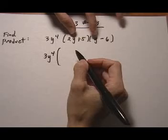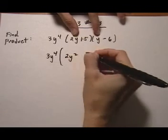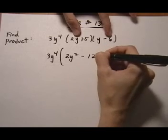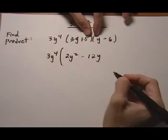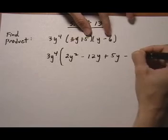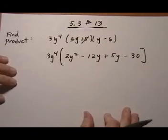So if we FOIL these out we get 2y squared and then 2y times minus 6 is minus 12y. Then we are done with the 2y. So we go to the 5. 5 times y is plus 5y. 5 times minus 6 is minus 30. And we're done with the 5. So we've done the distributing.